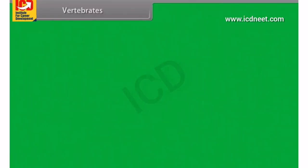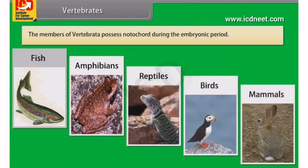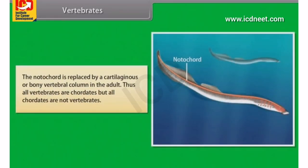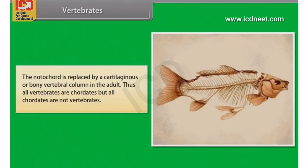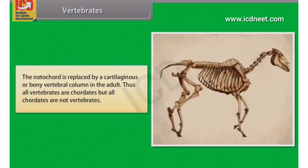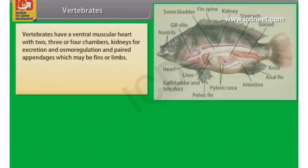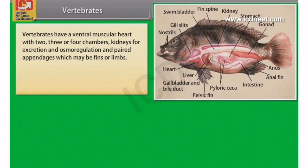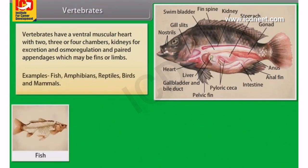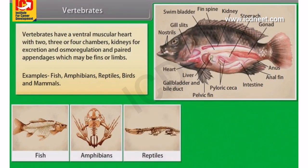The members of vertebrata possess notochord during the embryonic period. The notochord is replaced by a cartilaginous or bony vertebral column in the adult. Thus, all vertebrates are chordates, but all chordates are not vertebrates. Vertebrates have a ventral muscular heart with two, three or four chambers, kidneys for excretion and osmoregulation, and paired appendages which may be fins or limbs. Examples: fish, amphibians, reptiles, birds and mammals.